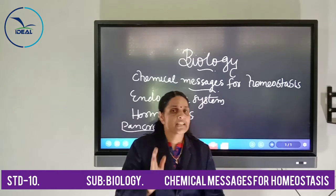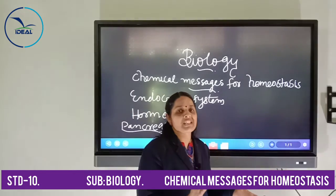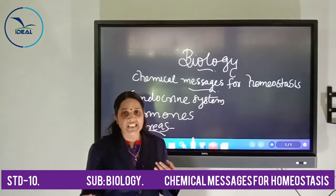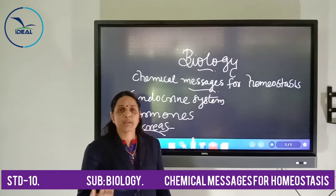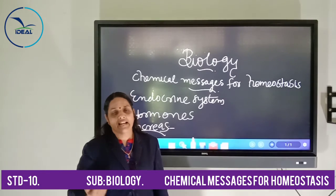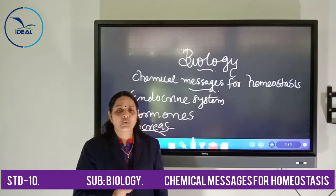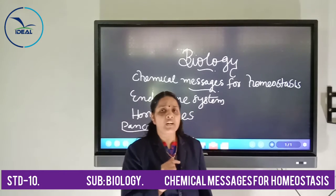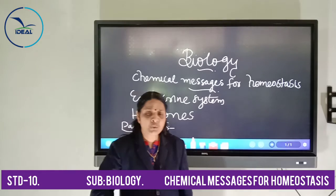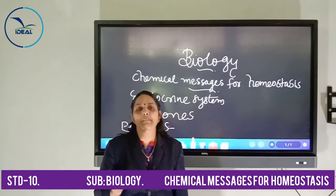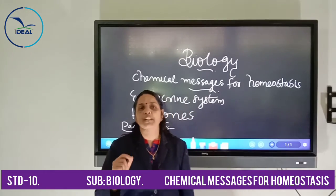The speciality of the pancreas is that it is both exocrine and endocrine — responsible for producing digestive juices for digestion, and also responsible for producing hormones to maintain body activities. Now let us discuss the location of the pancreas. The pancreas is located in between the stomach and duodenum. Duodenum is the first part of the small intestine.